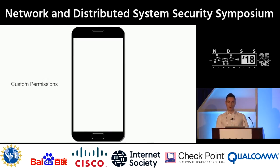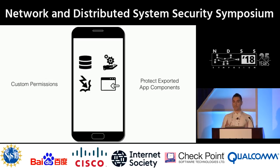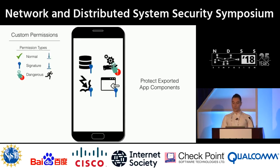On top of the system-defined permissions, Android provides third-party developers the ability to declare their own custom permissions. This can be used by an application developer to protect their own application components. On Android, these components are content providers, which are essentially databases, background services, broadcast receivers — which are entry points to the application that can be triggered by different system events — or activities, which are graphical user interfaces designed to perform a single task on the device. The most common use scenario of custom permissions by third-party apps is to use them to protect these components with signature permissions.